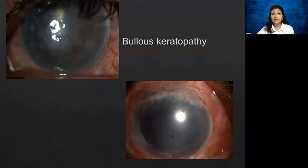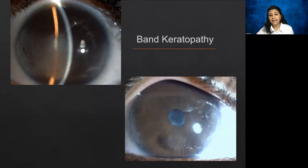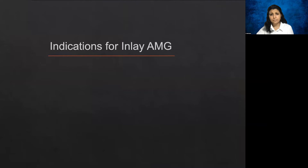Other common indications include: persistent epithelial defects (post-PK, neurotrophic ulcers, non-healing infective keratitis) where an onlay membrane heals defects in 2–3 weeks; bullous keratopathy in end-stage disease not planned for transplantation, where an onlay membrane reduces pain; and band keratopathy after EDTA removal, where combining EDTA with an onlay membrane accelerates healing and reduces post-operative pain.